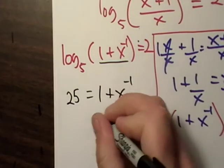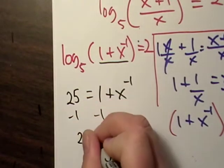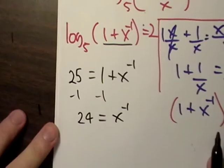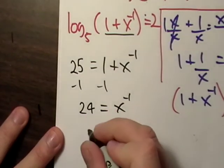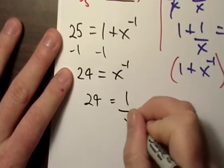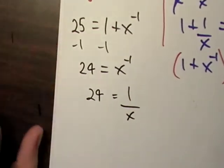Now we need to solve for x. So let's just subtract the 1. Well, this looks like it's going to end up being 24 equals 1 over x, because that's what x to the negative 1 means.